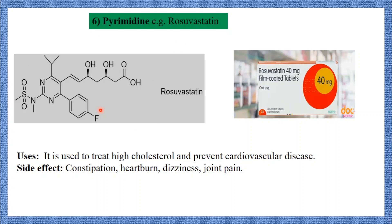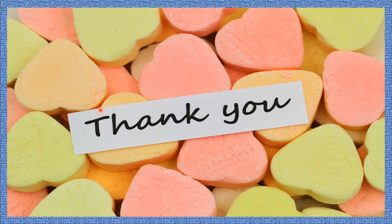Today we learned the classification of cardiovascular drugs based on pharmacological action — six types: first, amino acid derivative, example Valsartan; second, nitrate, example isosorbide dinitrate; third, aryloxy propylamine, example Atenolol; fourth, pyrimidine, example Amlodipine; fifth, sulfonamyl benzoic acid, example Furosemide; sixth, pyrimidine statin, example Rosuvastatin. Thank you.